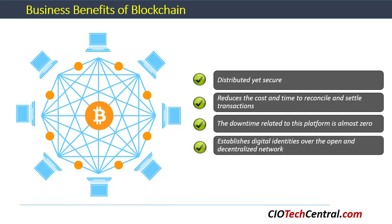Transactions in a blockchain system become part of the ledger through a very secure and trusted mechanism of validating digital signatures based on the concepts of public key cryptography. This makes blockchain systems well suited for use cases that require establishing digital identities over an open and decentralized network, especially where multiple parties need to establish the identity of individuals.